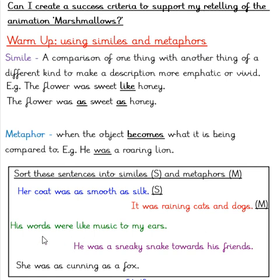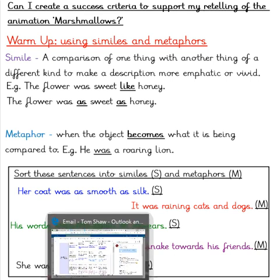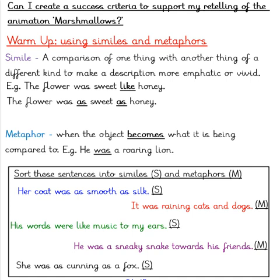Let's take a look at our third sentence: 'His words were like music to my ears.' This is a simile. The word 'like' tells us this is a simile — it suggests that the person liked the words they heard. Our next sentence: 'He was a sneaky snake towards his friends.' This was a metaphor. The person is being described to be a sneaky snake. Finally, 'He was as cunning as a fox.' This is a simile — the clues here were the words 'as,' describing the person to be like a fox because of how cunning they are. Well done if you got those correct.